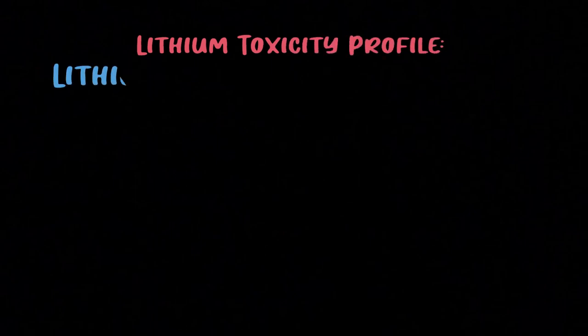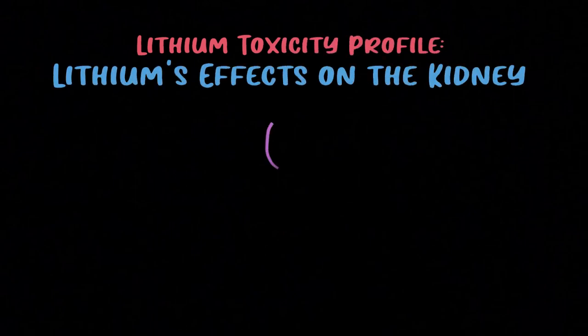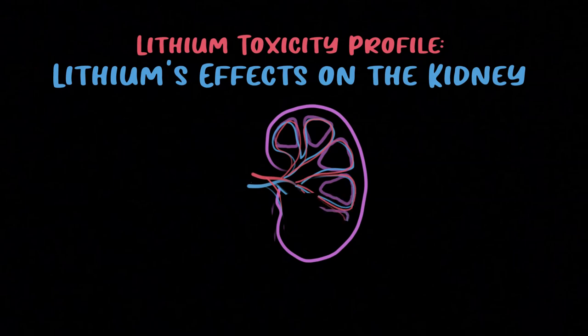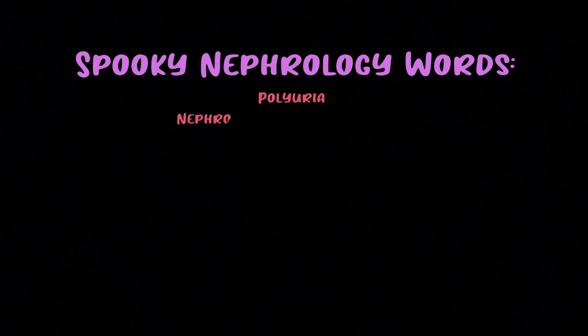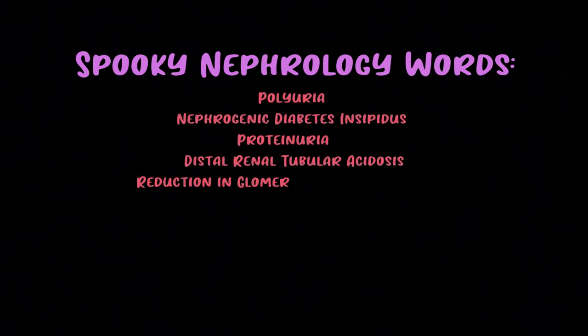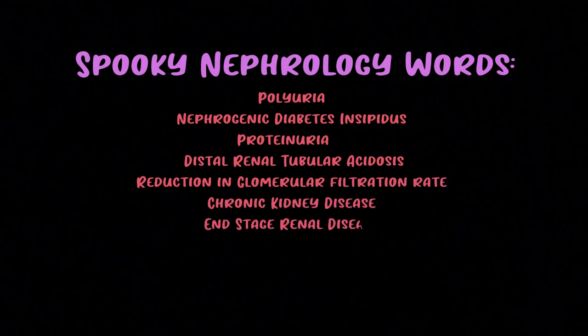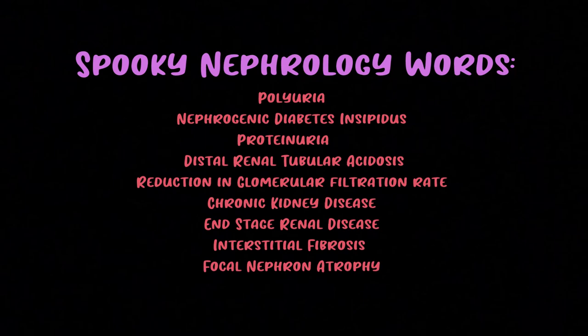This video is about the effects that lithium has on the kidney. Grasping these effects is deceptively simple — the reason people think it's so complex is because the problems it causes involve big scary nephrology words. For example, lithium can cause polyuria, nephrogenic diabetes insipidus, proteinuria, distal renal tubular acidosis, reduction in GFR, chronic kidney disease, ESRD, interstitial fibrosis, and focal nephron atrophy.